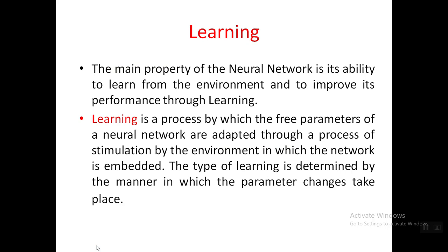That's why we always separate data into training data and test data — we need to give more data to the neural network to train itself on the environment. The free parameters of the neural network are changed based on the stimulation of the environment. This process is called learning, as far as the neural network context is concerned.